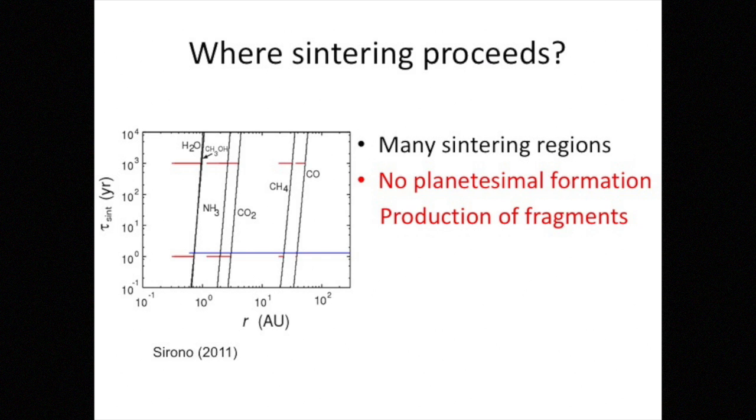And this is one year, and this is 1,000 years. So in these red regions, for example, in this region, H2O ice sinters within 1,000 years. And there are distinct several sintering regions corresponding to different ice species.